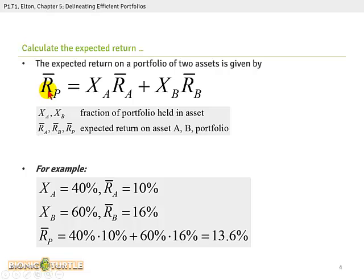And the expected return here in Elton's notation is just a weighted average of the component assets. So as we often do in finance, we start with the basic two-asset portfolio. Pretty much everything we do here can be extended to N assets, and then we just flip over into matrix notation. But we start with two assets, very typical. And then the fraction of the portfolio is multiplied by the expected return of each of the components. It gives us the expected return.